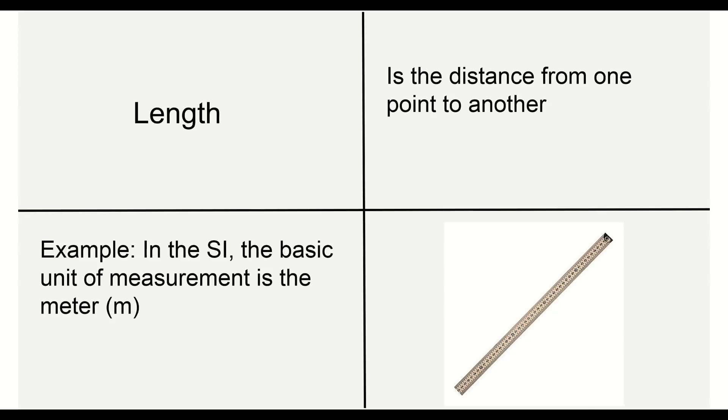In talking about these units, the first one we're going to talk about is length. Length is the distance from one point to another. So we're going to have point A and if we travel we would have point B. So this distance is going to equal our length. For example, in the SI the basic unit for measurement is the meter. That's the SI unit.